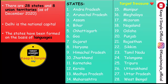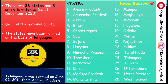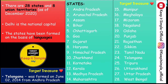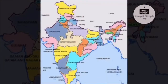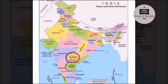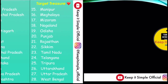In the Target Treasure section, we have listed all 28 states of India in alphabetical order, starting from Andhra Pradesh all the way up to West Bengal. An important fact is that the state of Telangana was formed on June 2, 2014, from Andhra Pradesh. So Andhra Pradesh was bifurcated into Telangana and Andhra Pradesh — this is very important for competitive exam preparation.